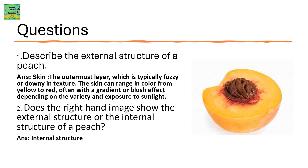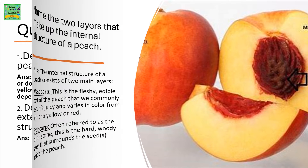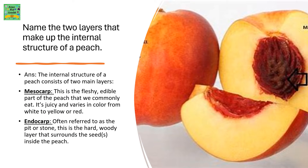Does the right-hand image show the external or internal structure of a peach? It shows the internal structure of the peach. Name the two layers that make up the internal structure of a peach. The internal structure of a peach consists of two main layers: the mesocarp, which is the fleshy edible part that we normally eat, juicy and varying in color from white to yellow or red; and the endocarp, often referred to as the pit or stone, which is the hard woody layer that surrounds the seed inside the peach.